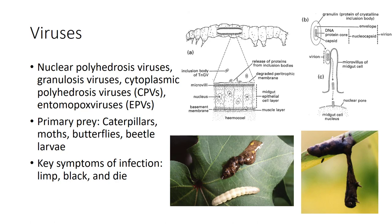In conclusion, biological control is a useful strategy in integrated pest management. Predators, parasites or parasitoids, and microbes can be purchased and applied as part of that strategy.